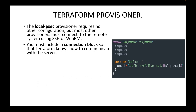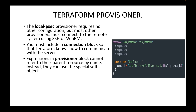If you are going with remote-exec or the file provisioner, you will have another block — the connection block — where you provide the connection information as to how Terraform needs to connect to the remote server. Expressions in a provisioner block cannot refer to the parent resource by name; instead there is a special self object.